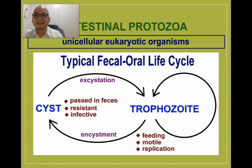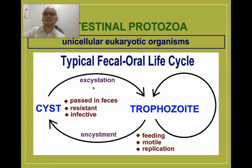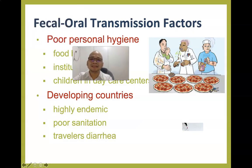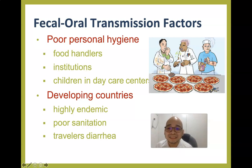Once the cyst passes through the stomach and reaches the small intestine, it undergoes excystation, resulting in the formation of trophozoites. So: encystation = formation of cysts; excystation = formation of trophozoites. The main mode of transmission is poor personal hygiene. They are seen in institutions that do not observe proper hygiene — restaurants, street food stalls, and daycare centers. Those able to pass cysts are called cyst passers, and the majority are asymptomatic.